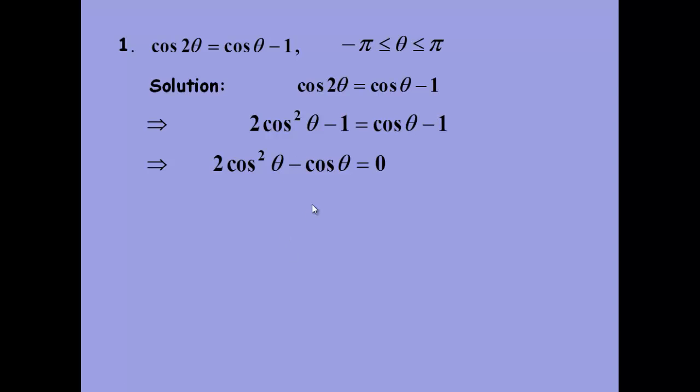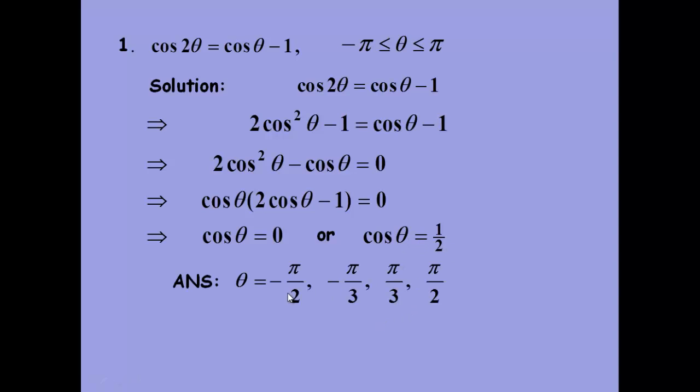So use the one that's just in terms of cos squared. Rearrange it. We haven't got a constant term, so just factor out cos θ. We then have solutions where cos θ equals zero or cos θ equals one-half. And those are the solutions you should have got between minus π and π.